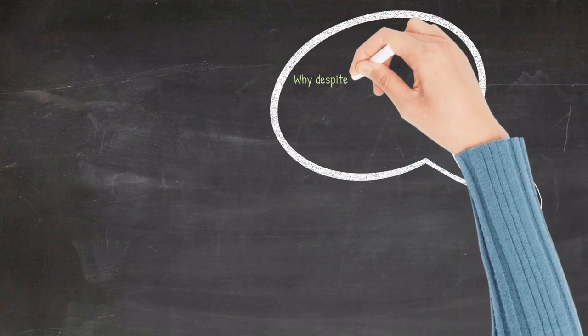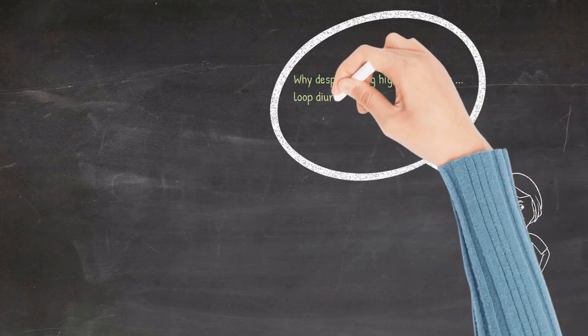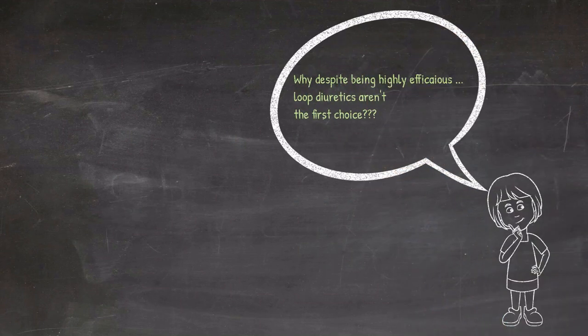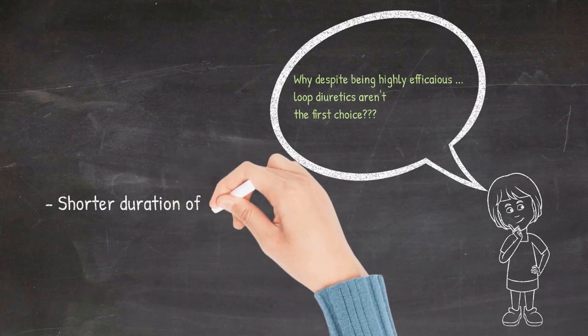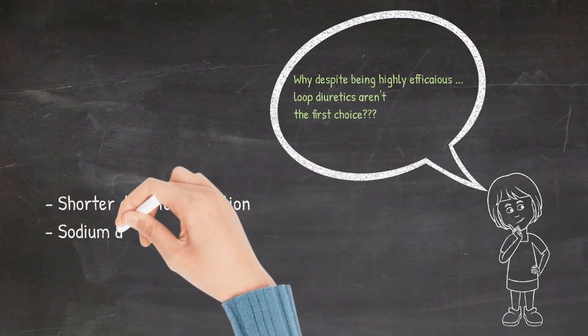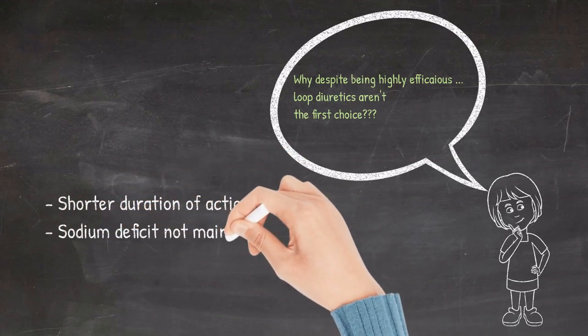Why, despite being highly efficacious, loop diuretics aren't the first choice in the management of hypertension? This is because of the shorter duration of action of loop diuretics. Sodium deficit is not maintained round the clock because of the compensatory increase in sodium absorption from the proximal convoluted tubule.